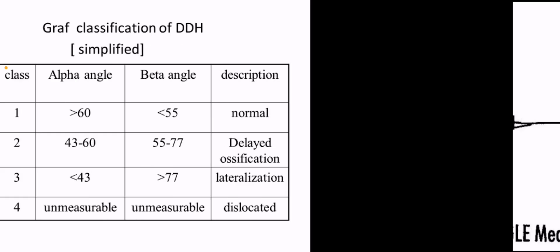Arthrogram indications: used to confirm reduction after closed reduction under anesthesia and help identify possible blocks to reduction. Inverted labrum: the labrum enhances the depth of the acetabulum by 20% to 50%.